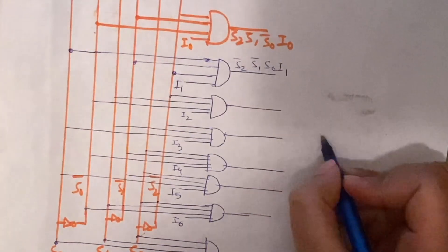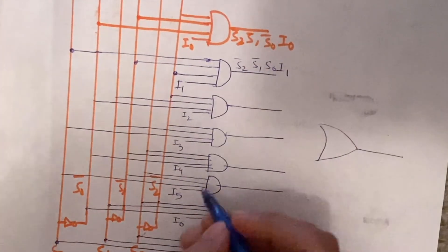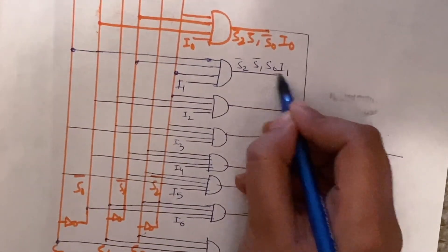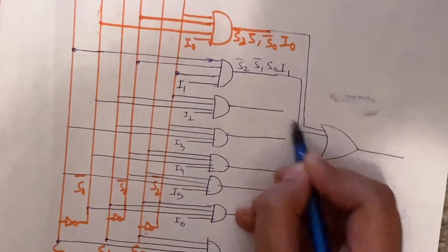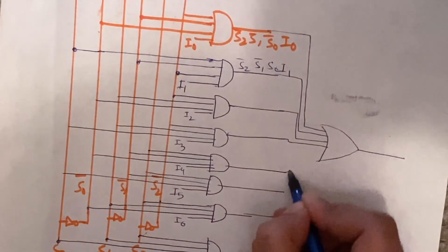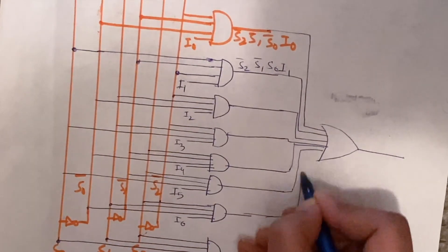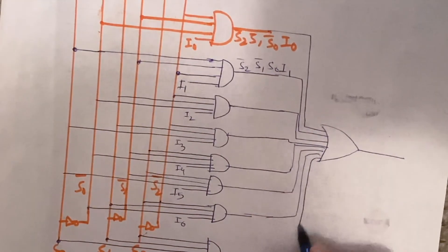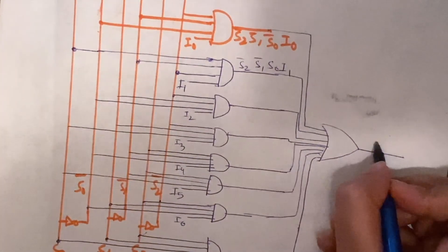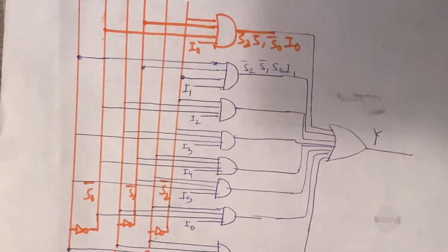Here we draw a large OR gate and connect every output of the AND gates to it. At the output of this OR gate we get our final output Y of the 8-to-1 multiplexer.